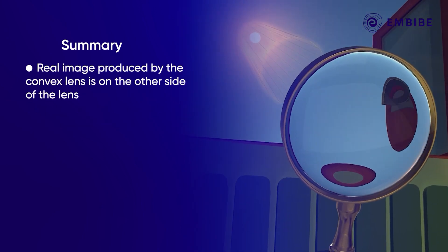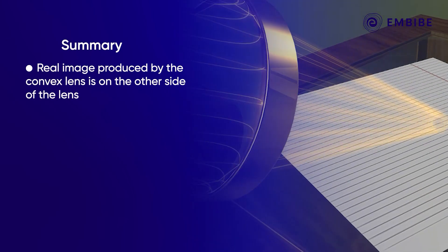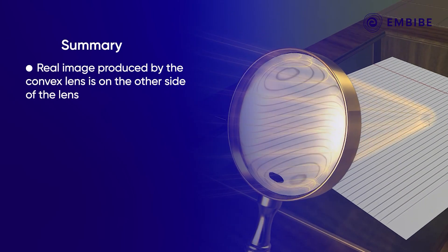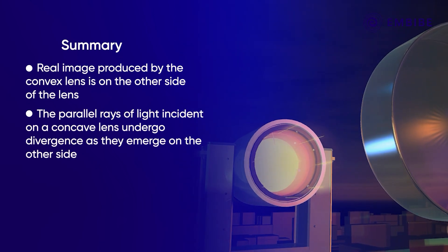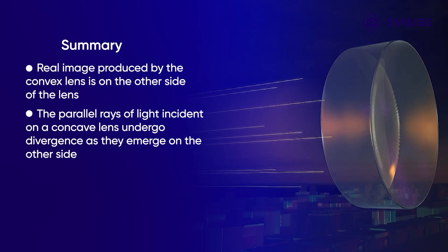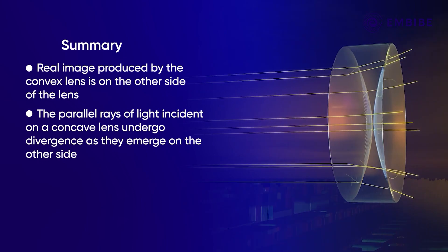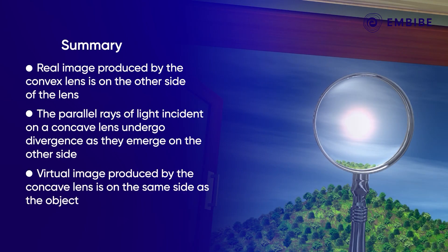A real image produced by a convex lens is formed on the other side of the lens. The parallel rays of light incident on a concave lens undergo divergence as they emerge on the other side. The concave lens produces a virtual image,